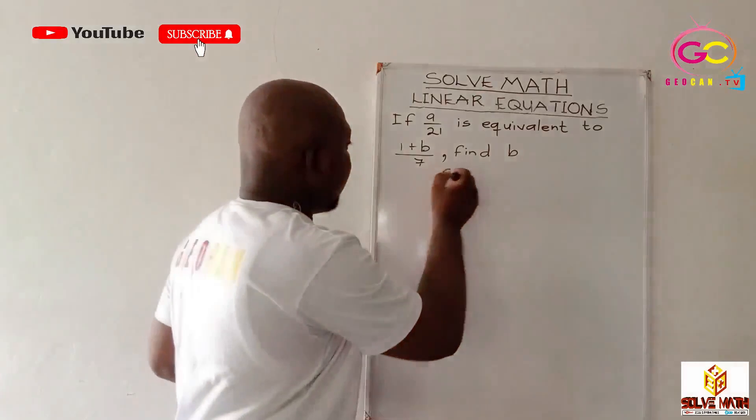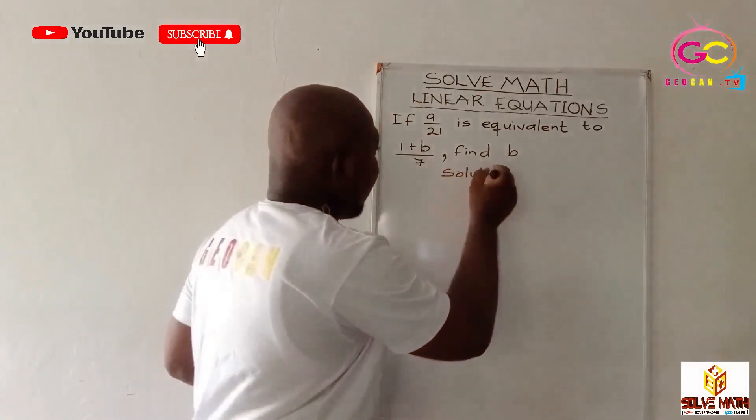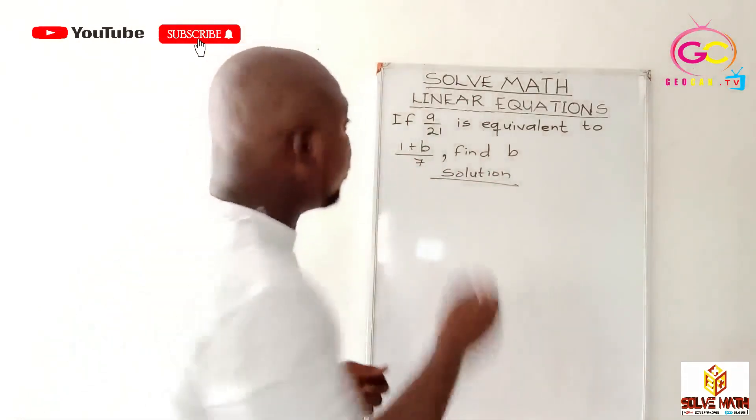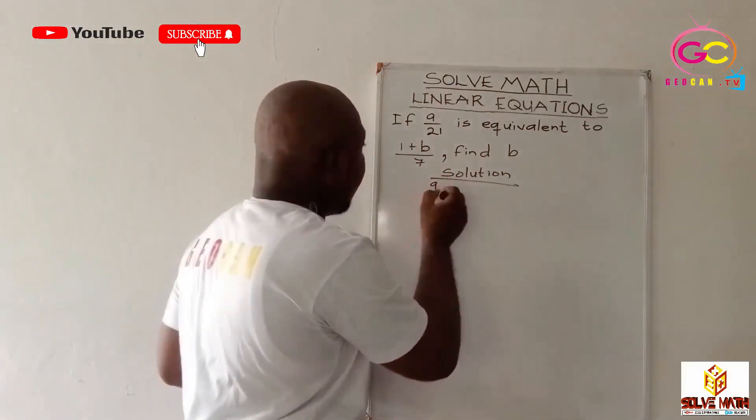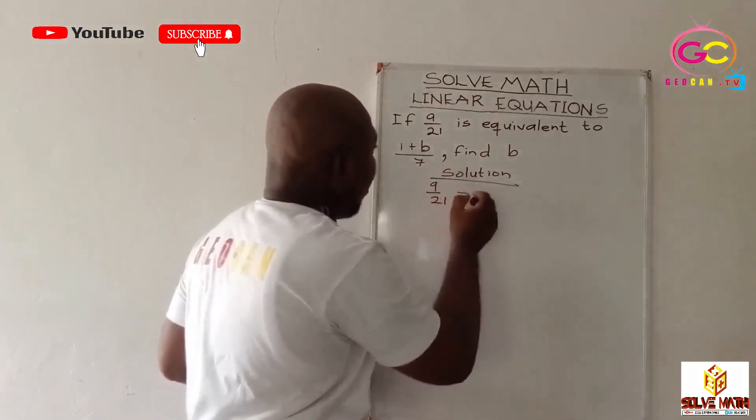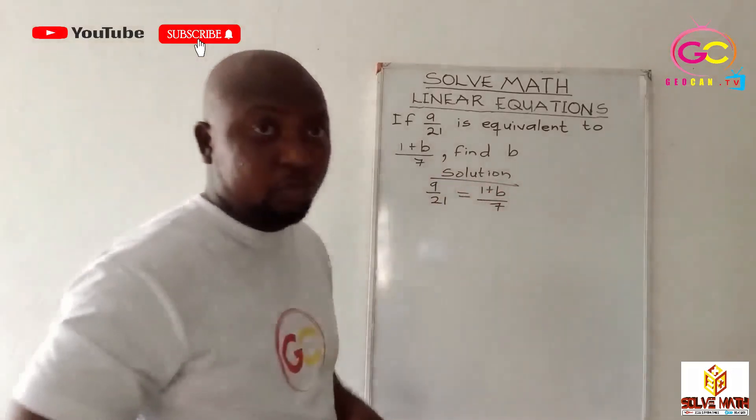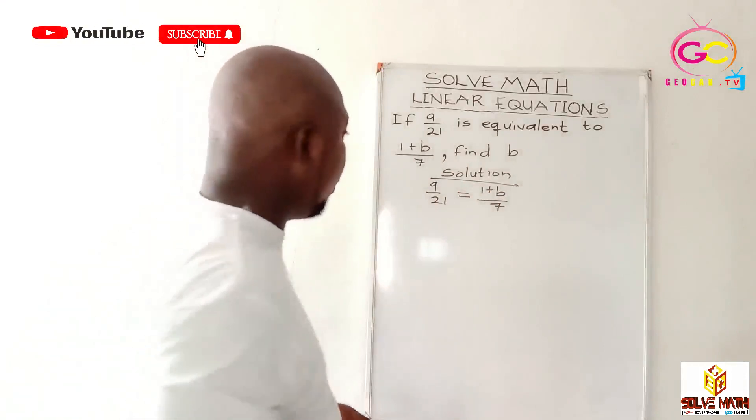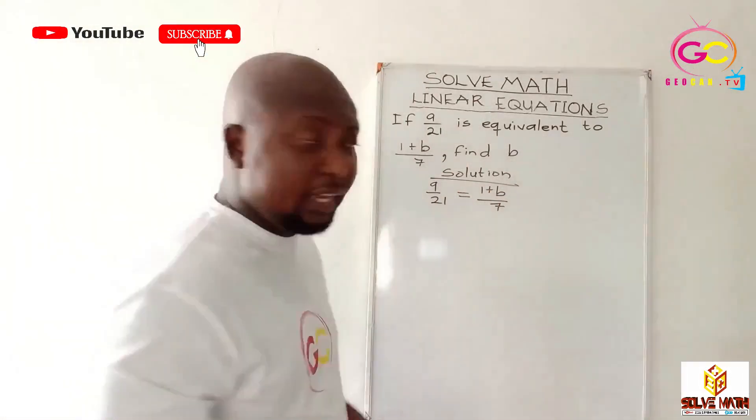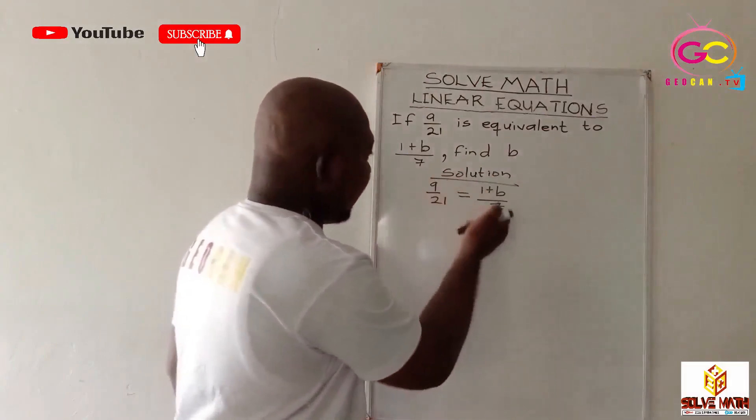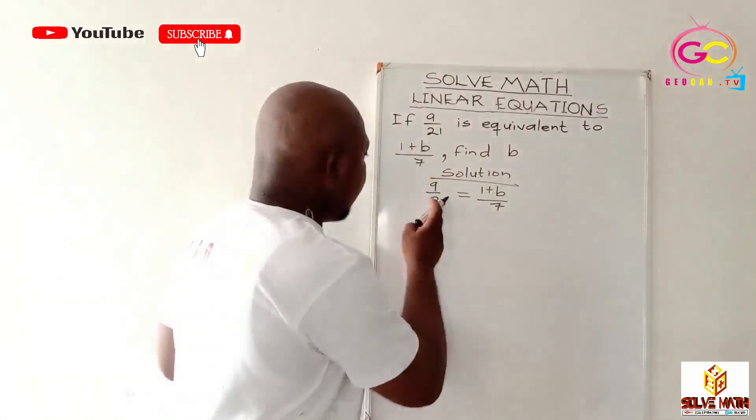Okay, so let's write our solution. Solution simply means how you solve it. So equivalence, as I said, simply means equal to. So you have 9 over 21 should be equal to 1 plus B all over 7. That is what the question wants from you. So this is the first step. What do you do? It becomes easy now. Cross multiplication. This multiplies that and this multiplies that.